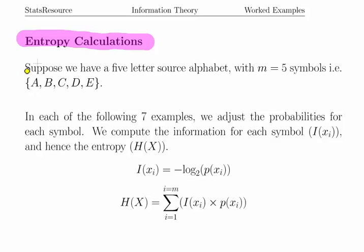Suppose that we have a five letter source alphabet with m equal to five. So essentially suppose we have an alphabet based on these five symbols here. In each of the following examples we adjust the probabilities for each symbol, and we compute the information for each symbol which is I of xi, and then hence we compute the entropy H of X.